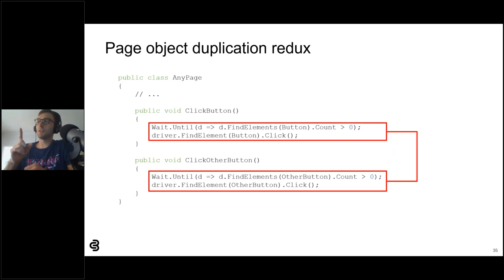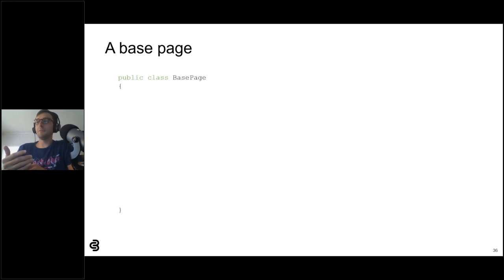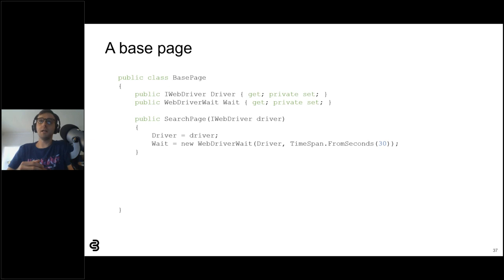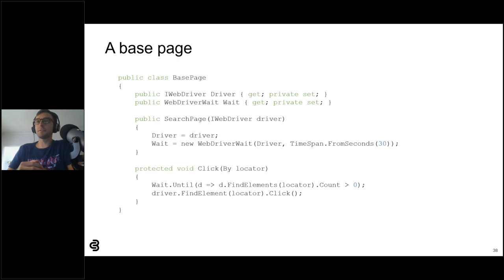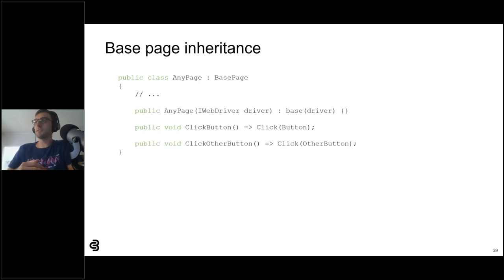At this point some teams will say, 'We can solve that with more object-oriented programming,' and they'll create the infamous base page — a parent class for all other page object classes. The base page has variables for the WebDriver and the wait object, and it provides common interaction methods, such as a click method that can click any element. Child pages inherit everything from the base page, and child page interaction methods frequently just call base page methods.